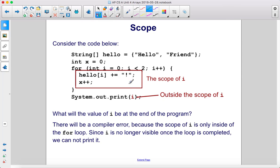Here you can see we've changed the code a bit. Instead, we've printed i here instead of x. What will the value of i be at the end of the program? Well, there will be a compiler error because the scope of i is only inside of the for loop. Since i is no longer visible once the loop is completed, we cannot print it.